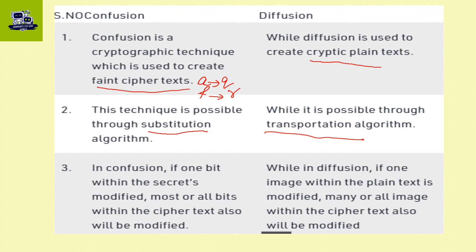In confusion, if one bit within the secret key is modified, most or all bits within the ciphertext will also be modified. So if we change one bit, we can change all bits.